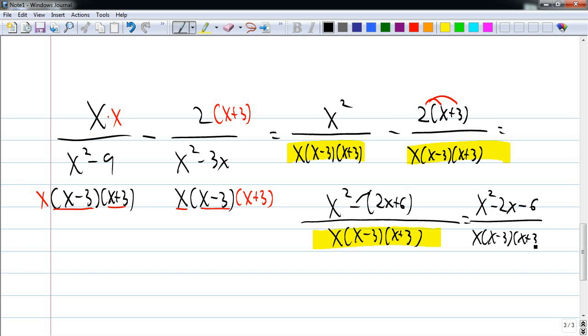Distributing that negative gives me x squared minus 2x minus 6 over x times x minus 3 times x plus 3. Now, if I could factor anything else here in my numerator, I would. Fortunately, I don't think I can factor this. I don't think this will factor for me. But if it did, I would factor it and then cancel anything that I could.